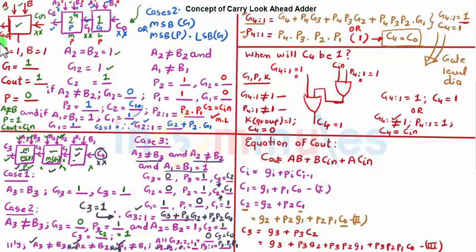Now let's finally do it for C4 and then we'll come to a very interesting reduction. So C4 here is equal to G4 plus P4 C3. Let's substitute C3 here: it is equal to G4 plus P4 G3 plus P4 P3 G2 plus P4 P3 P2 G1 plus P4 P3 P2 P1 C0.